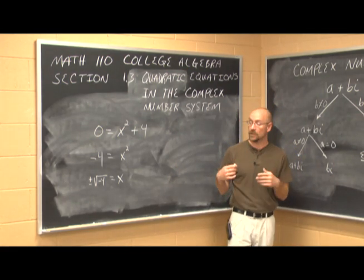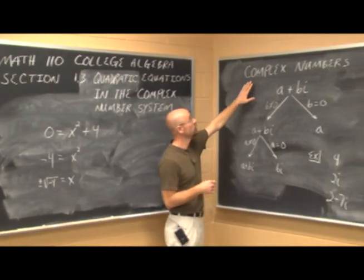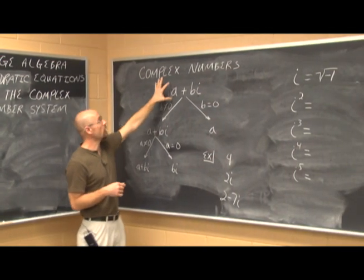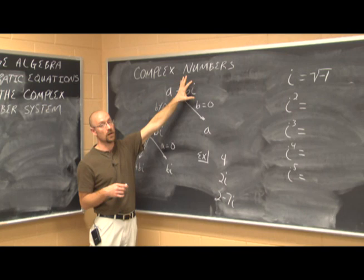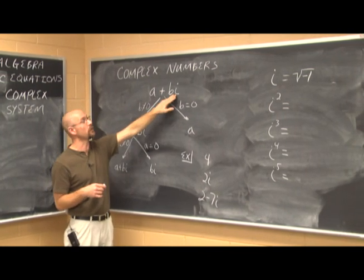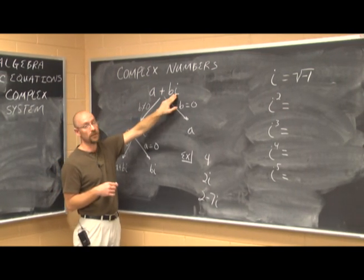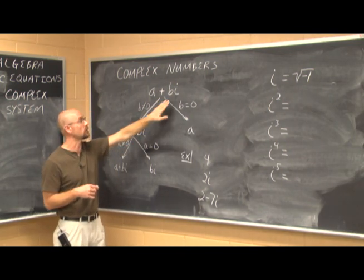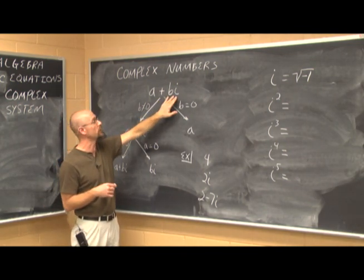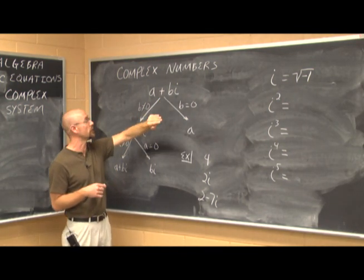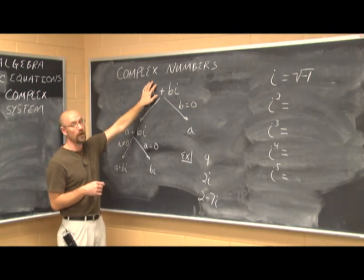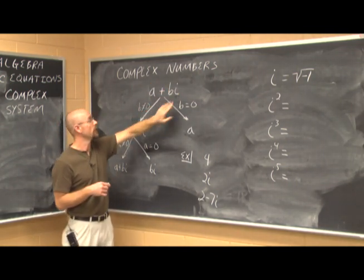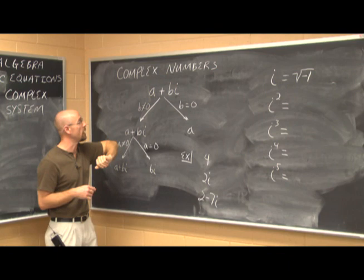Let's look at the complex number system. Complex numbers are always written in the form a plus bi, where the unit i is the basis of the complex number system. It has a real part and an imaginary part.